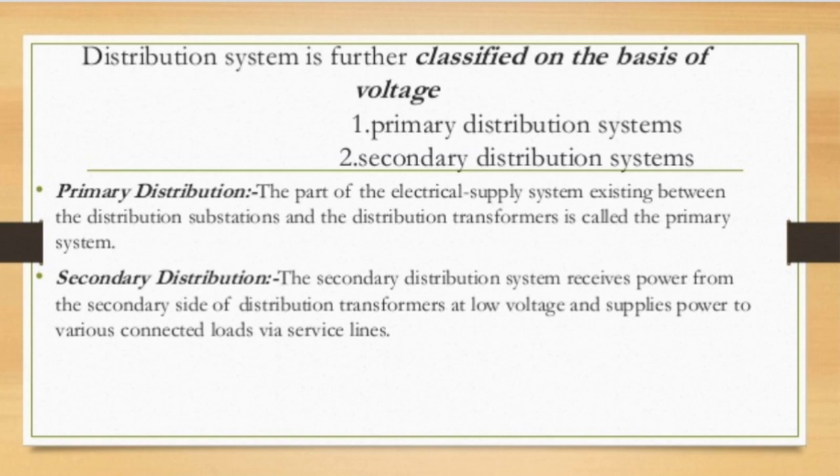From the substation, up to the distribution transformer at the street end, that portion is considered primary distribution. The voltage levels in primary distribution are high — more than 11 kV is the normal voltage for primary distribution, compared to the 230 volts or 440 volts used in homes.